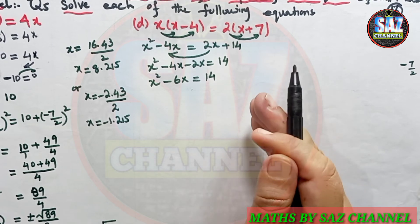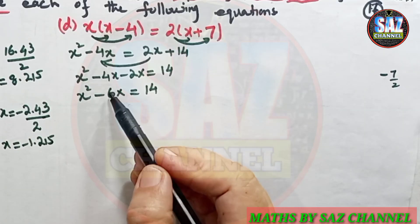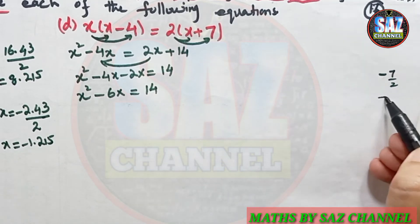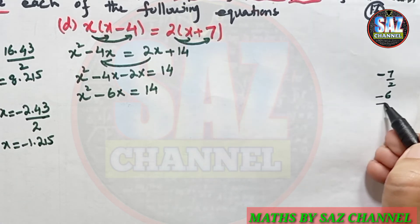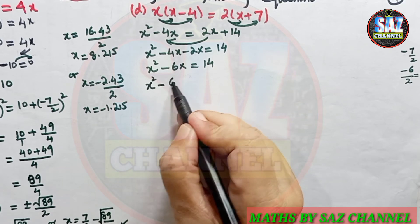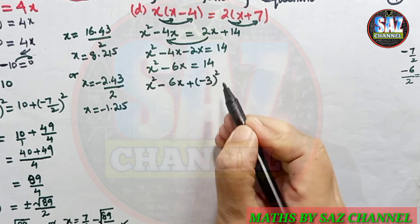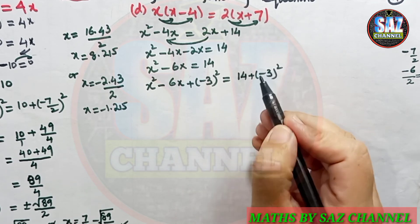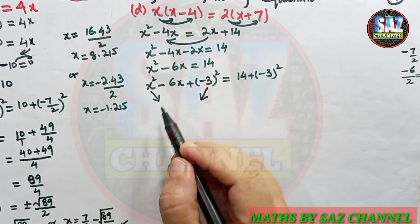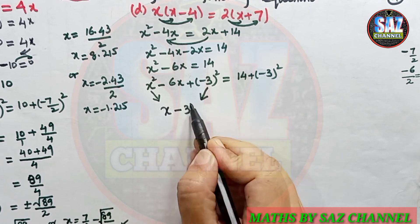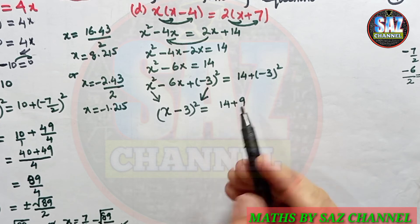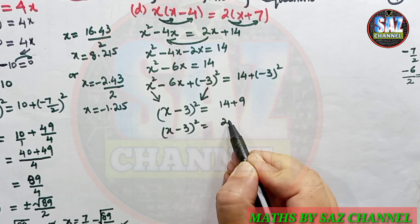To make the left-hand side a perfect square expression, I identify the coefficient of x, which is −6. I divide it by 2 to get −3, then add the square of that, which is (−3)² = 9, to both sides: x² − 6x + 9 = 14 + 9. The left-hand side x² − 6x + 9 is similar to (a − b)², so I write it as (x − 3)². Therefore (x − 3)² = 23.